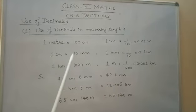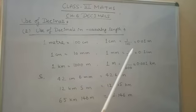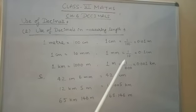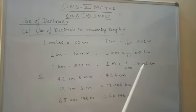1 centimeter is equal to 10 millimeter. So 1 millimeter is equal to 1 upon 10 centimeter, 0.1 centimeter. 1 kilometer is equal to 1000 meter, that is 1 meter is equal to 1 upon 1000, that is 0.001 kilometer.